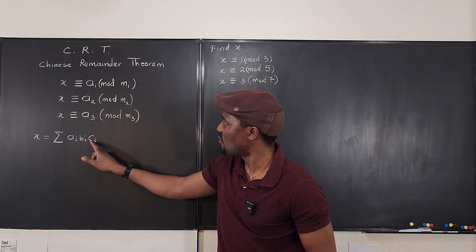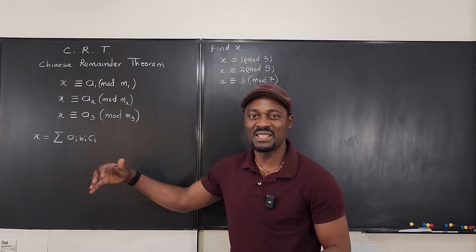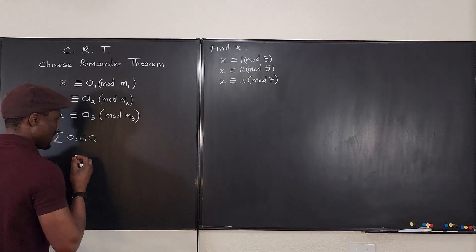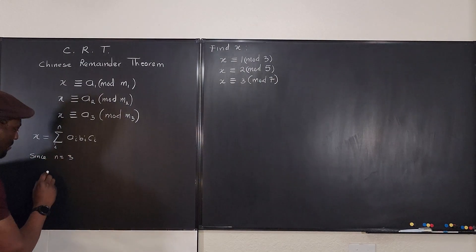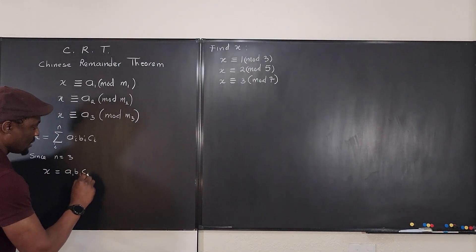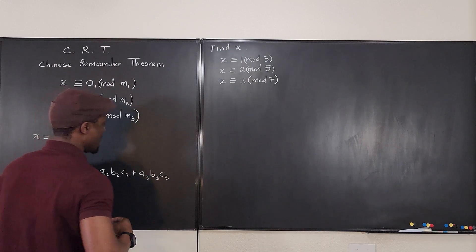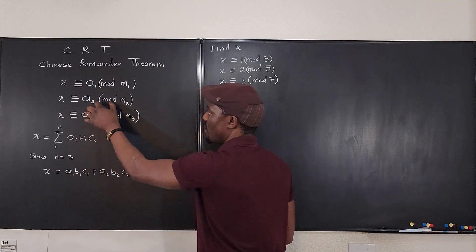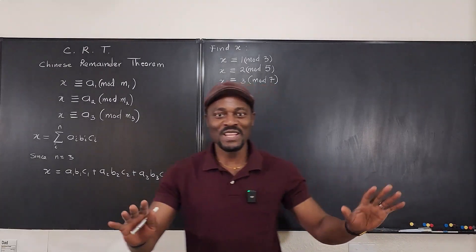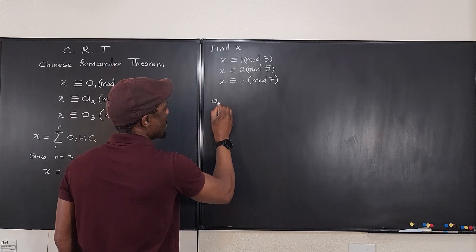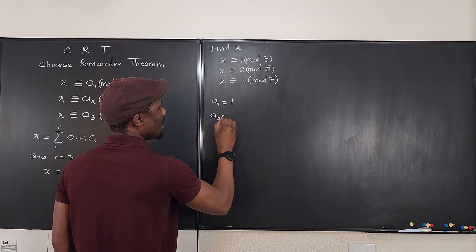Let's look at the formula. We need to find what a, b, and c are for each of the three divisions. The sum of these three abc terms gives your answer. Since n equals three here, our answer is: x = a₁b₁c₁ + a₂b₂c₂ + a₃b₃c₃. Now, a₁ is simply the first remainder, which is one; a₂ is the second remainder, which is two; and a₃ is three.